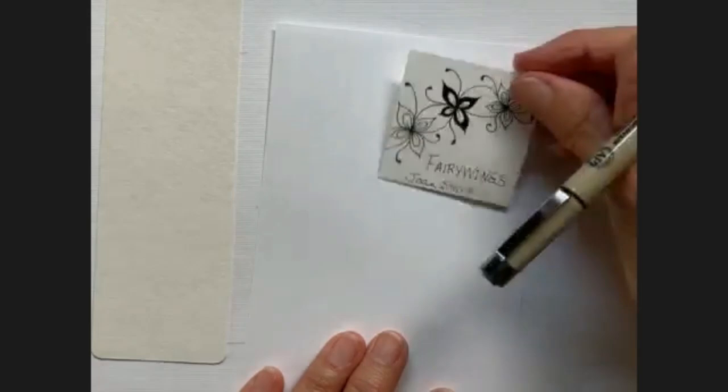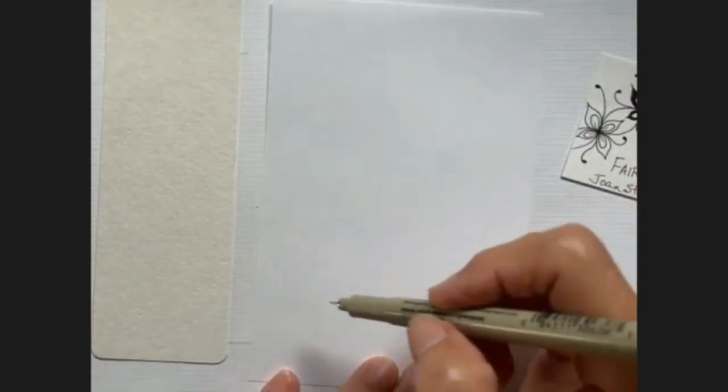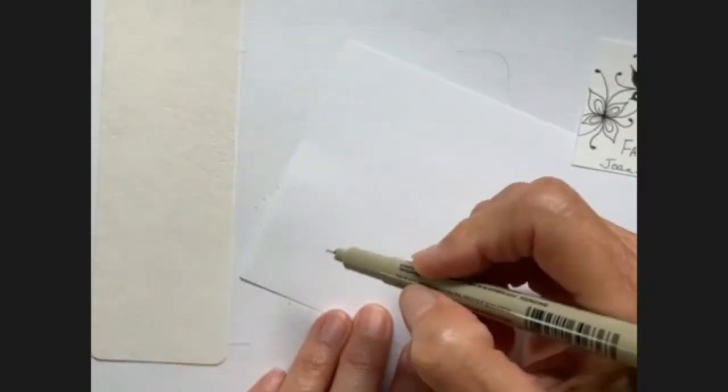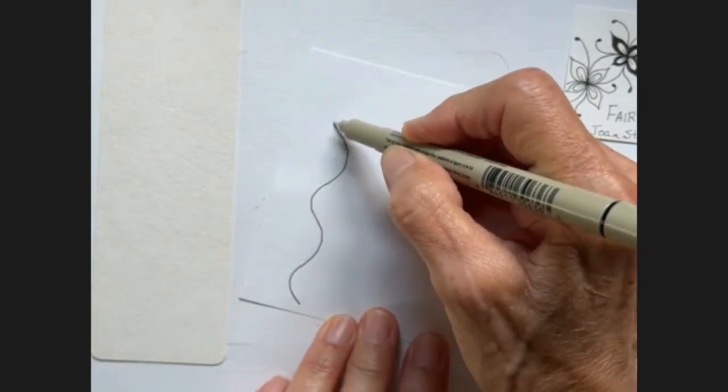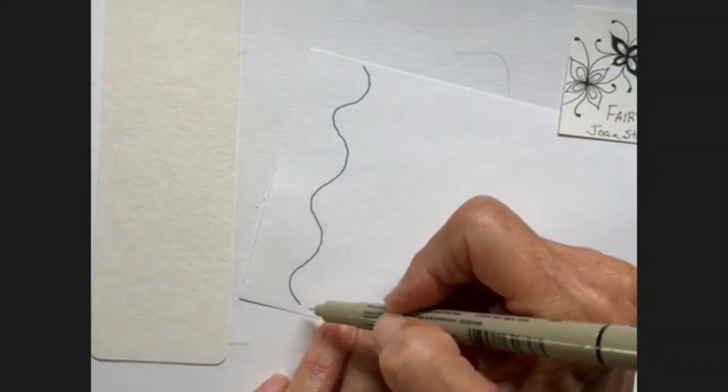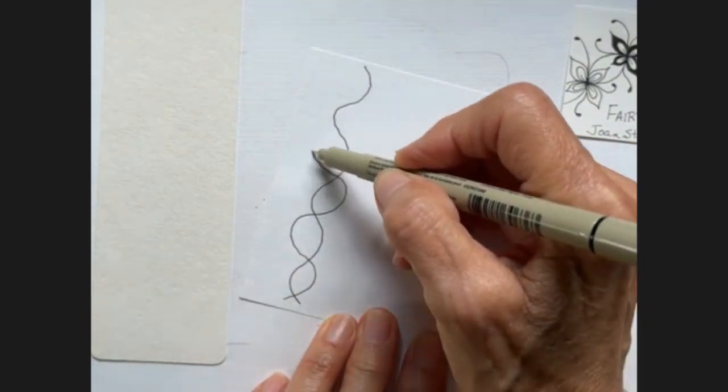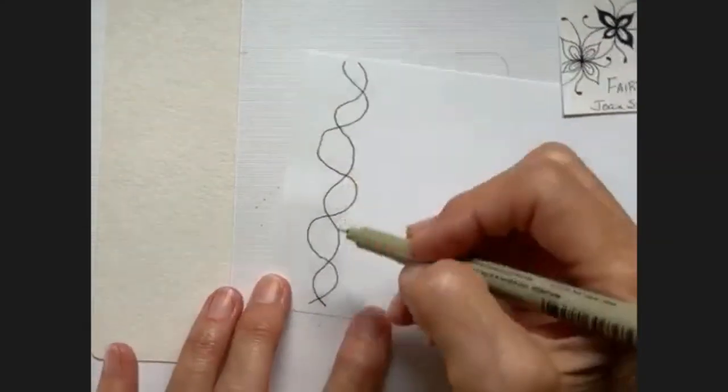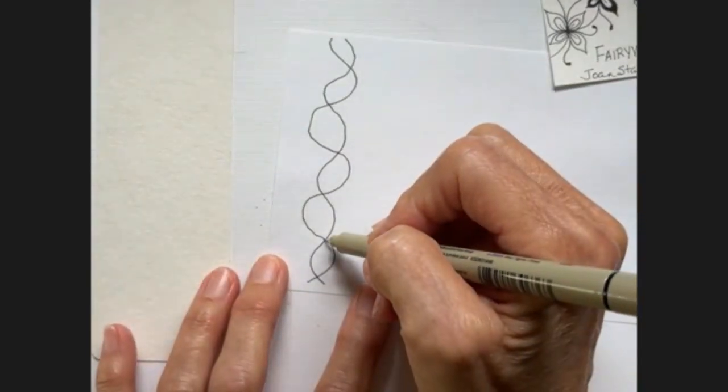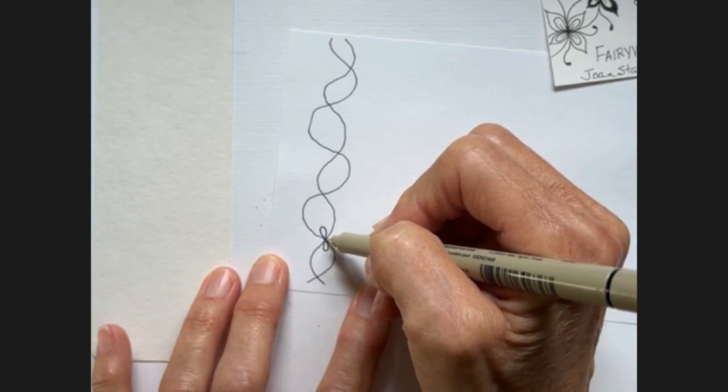I want to show you how Fairy Wings starts. She really just does a wiggly line. Nothing perfect. And then she comes back the other way around it. Again, you don't need anything perfect.